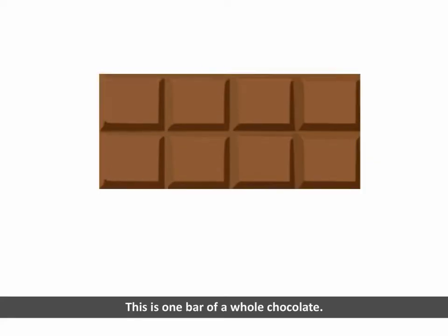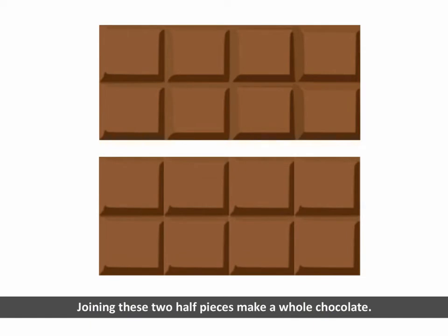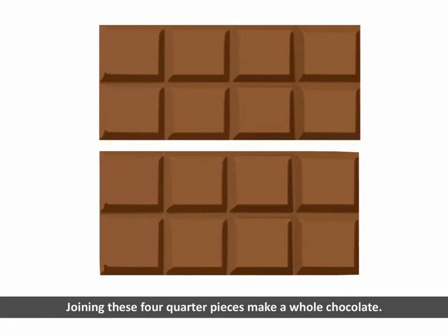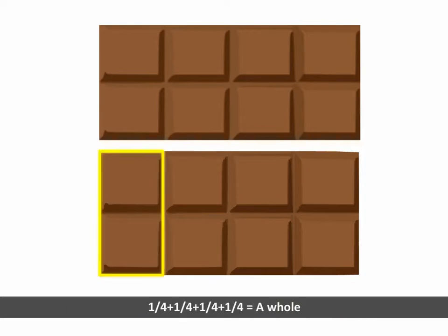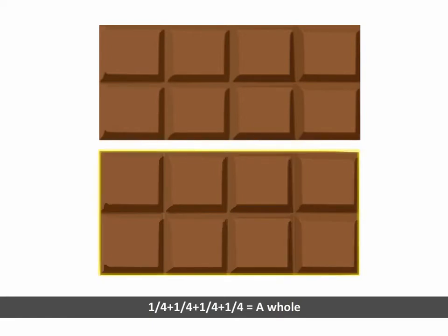This is one bar of a whole chocolate. Joining these two half pieces makes a whole chocolate. 1 upon 2 plus 1 upon 2 is equal to a whole. Joining these four quarter pieces makes a whole chocolate. 1 upon 4 plus 1 upon 4 plus 1 upon 4 plus 1 upon 4 is equal to a whole.